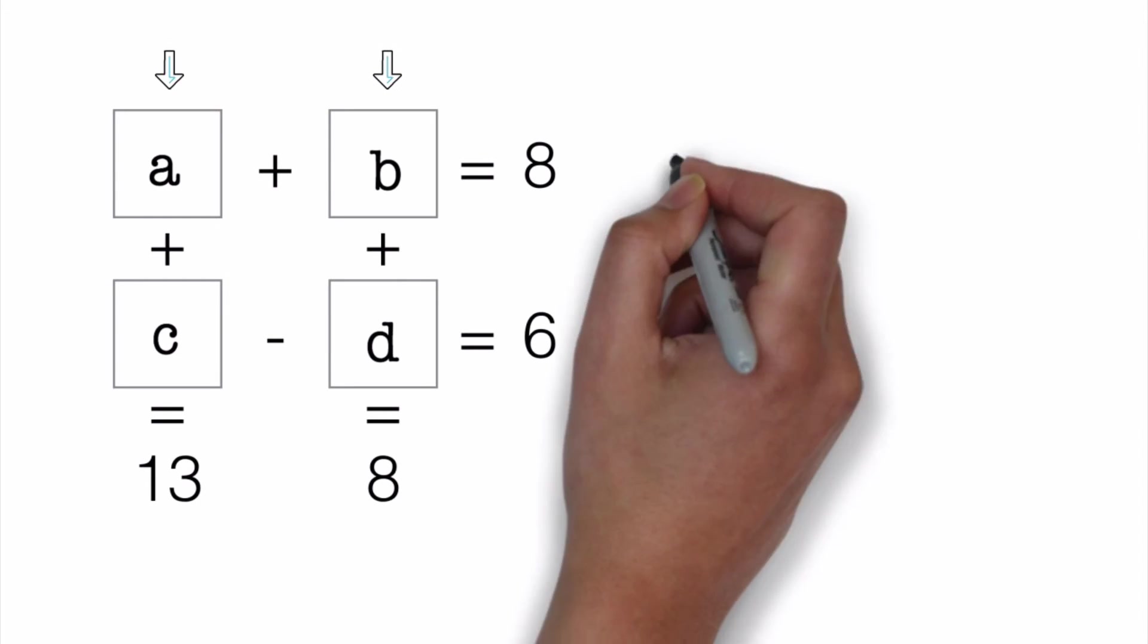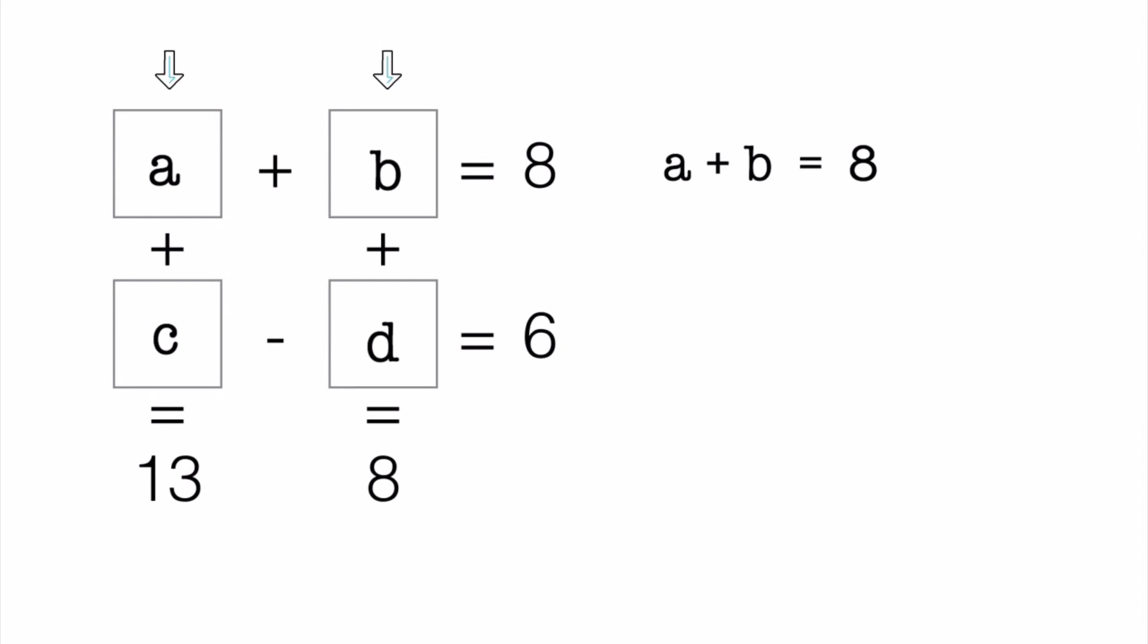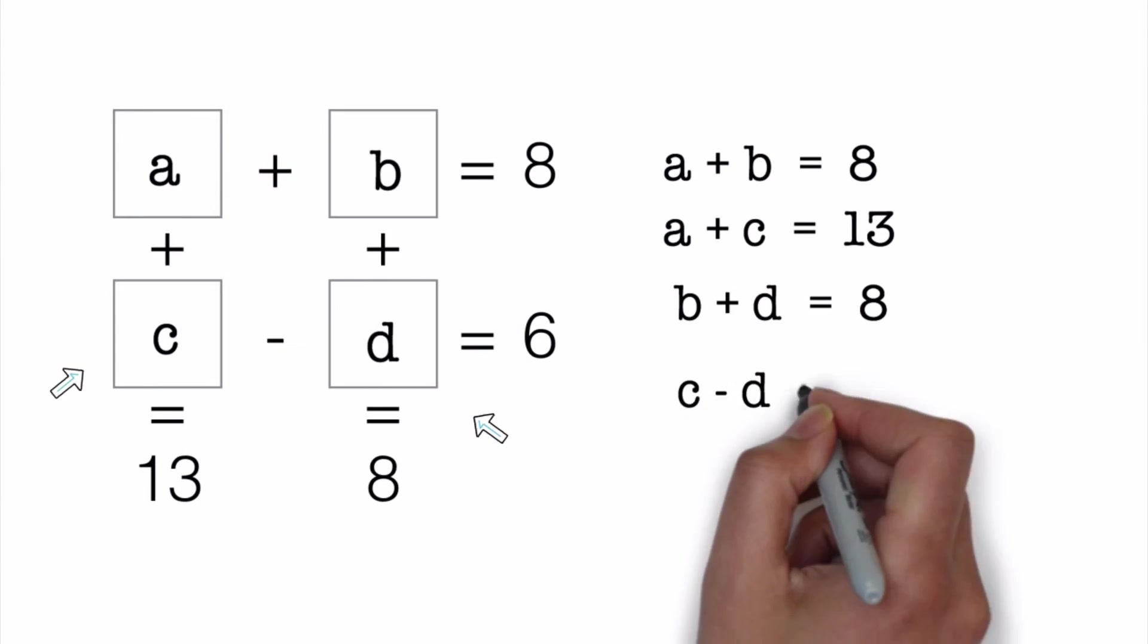Looking at these two elements we can say A plus B equals 8. And looking at these two we say A plus C equals 13. These two tell us that B plus D equals 8, and finally C minus D equals 6.